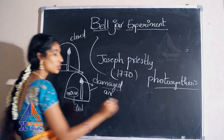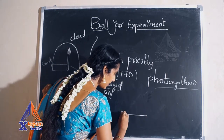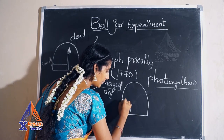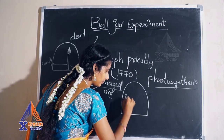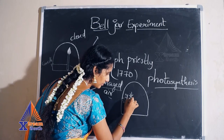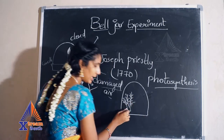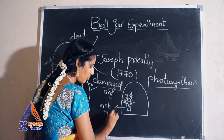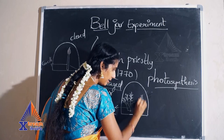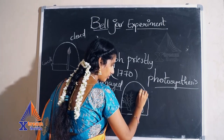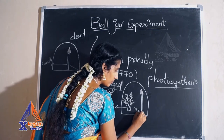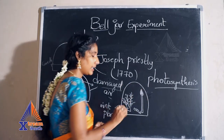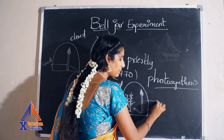So he thought there is damaged air in the bell jar. In the next experiment, he took the bell jar and he placed one mint plant — a small mint plant — and he placed a candle and a mouse also. He took the mouse with a mint plant and a candle which is lighting.